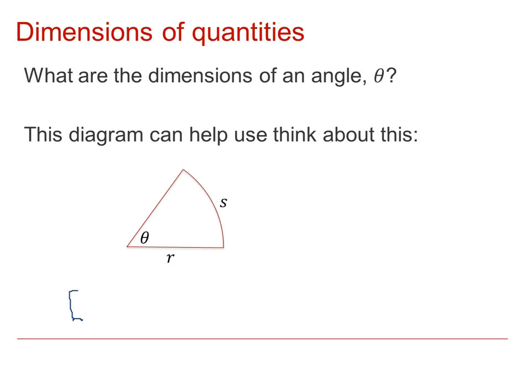So the dimensions of θ would be the dimensions of S divided by the dimensions of R. But these are both lengths, so we've got length over length. In other words, it has no dimensions. It's what we call a dimensionless quantity.